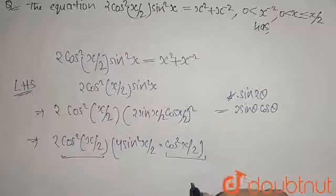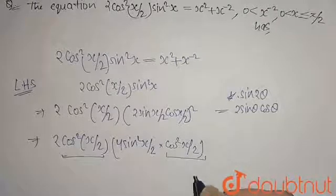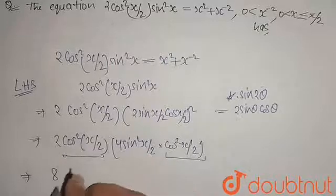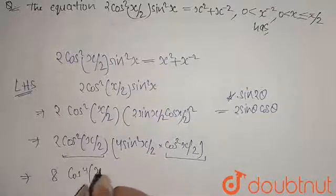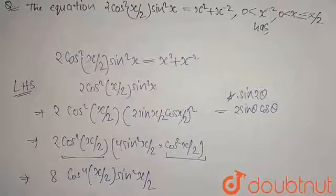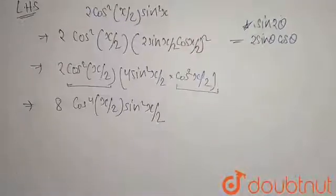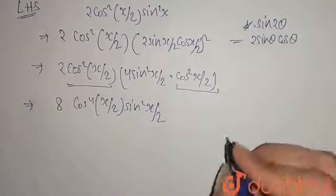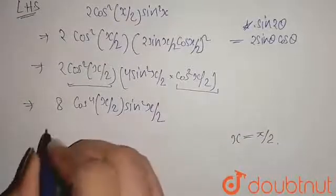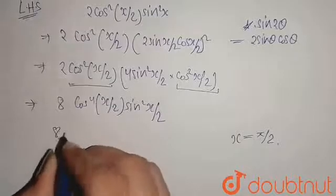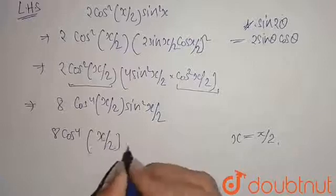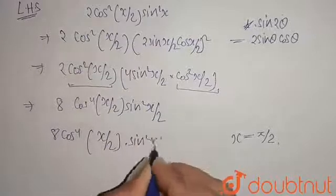Now combining cos²(x/2) and cos²(x/2), and 2 into 4 gives 8. So this simplifies to 8cos⁴(x/2)·sin²(x/2). Now, since x is between 0 and π/2, I am taking x = π/2.